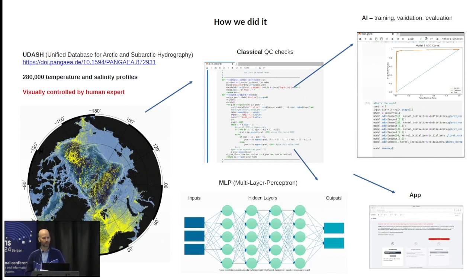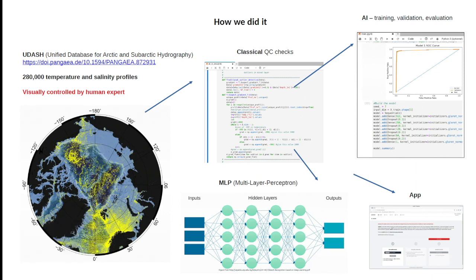We started with a large Arctic database at AWI called the U-DASH, which contains more than 280,000 temperature and salinity profiles from different sources. It's an Arctic dataset, so this works only for Arctic data at the moment. It has been quality controlled by our ocean experts, giving us a large labelled dataset to train the algorithm. We also implemented all classical quality control checks in Python Jupyter notebooks, set up a neural network — an MLP model — and did all the typical AI procedures: training, validation, evaluation, and then deployed everything in the web app.